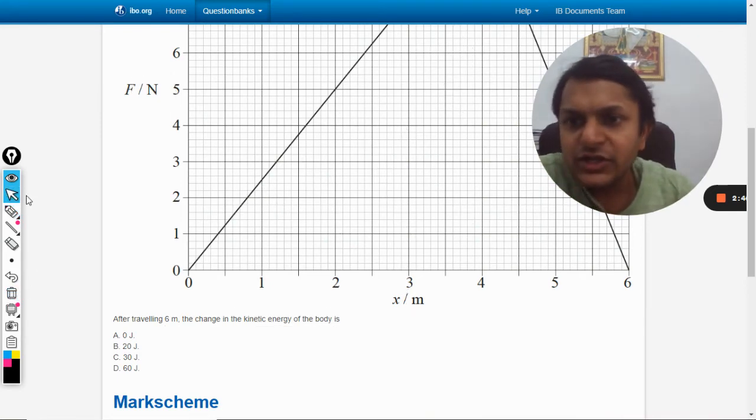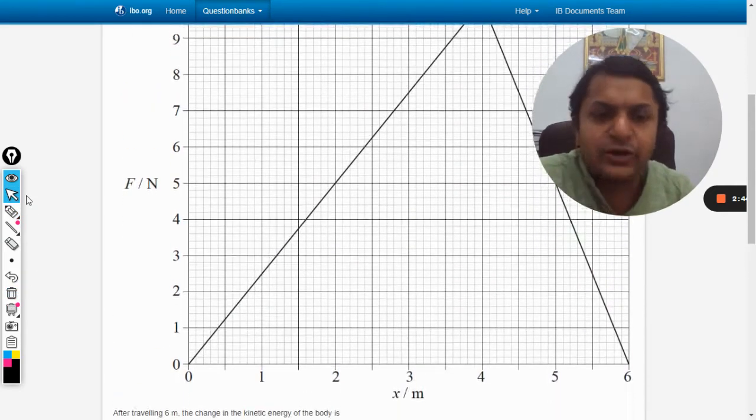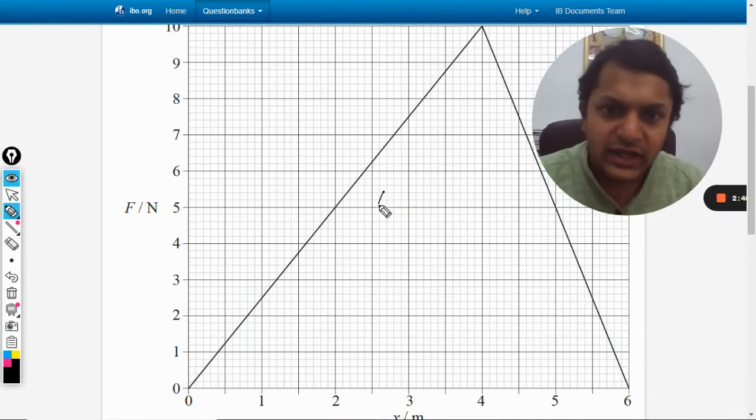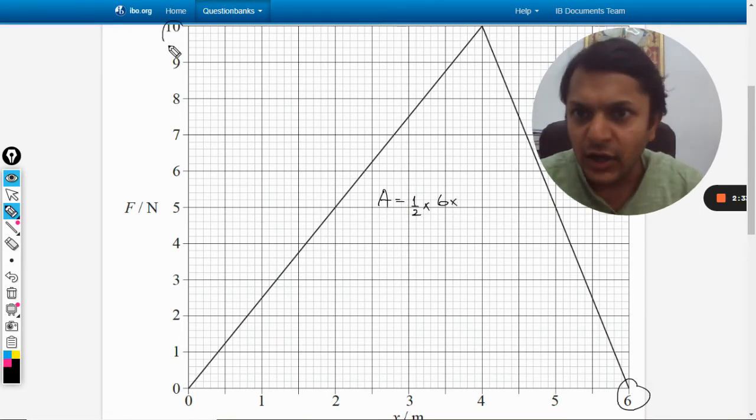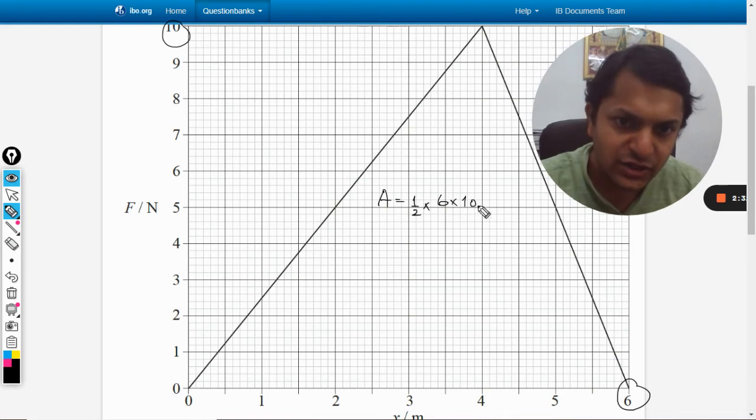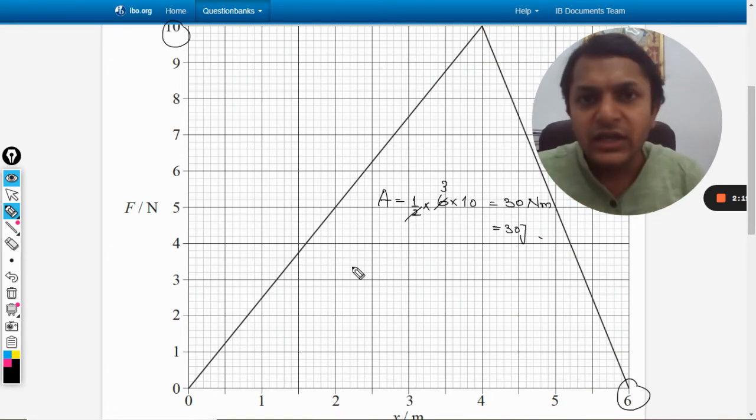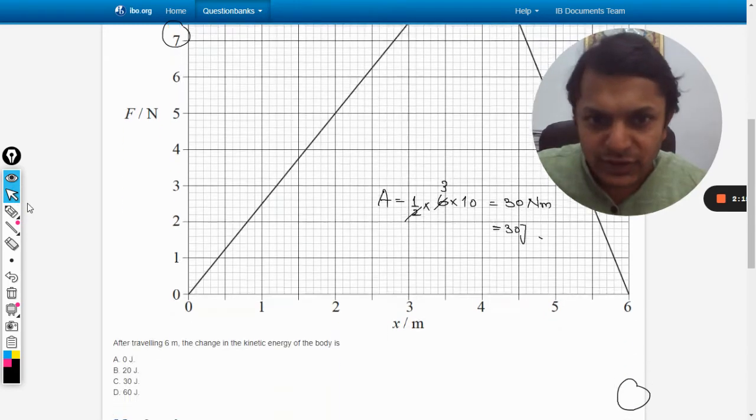So let us find the area. So this is a triangle and I am going to use the formula half into base into height. So the area will be given by half, and base is 6 meter into height. Now height is here, which is 10 newton. So this will be 3, so we can say it is 30, and what will be the unit? Newton meter. So it will be 30 joule is the work done on the body. So that should be equal to the change in kinetic energy. So our answer should be 30 joule.